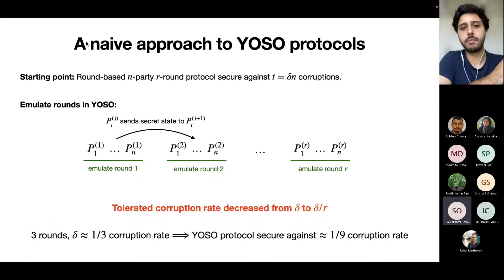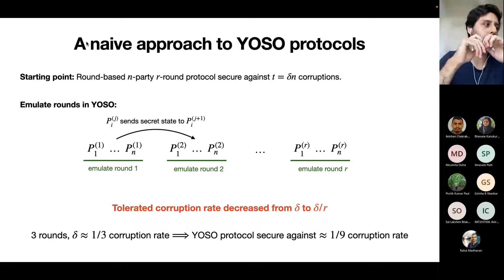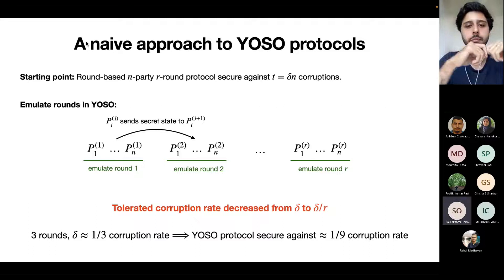It's also a very interesting open problem to assume more structure on the starting round-based protocol and try to get a better compiler. We don't know what to do better than this naive compiler.